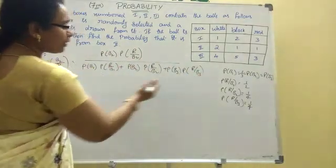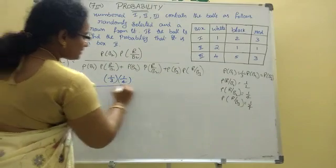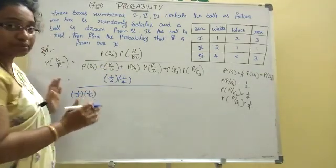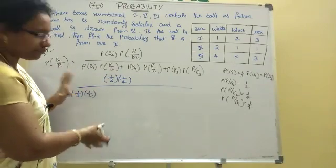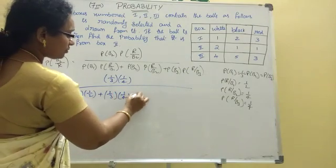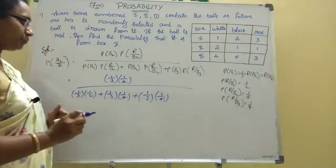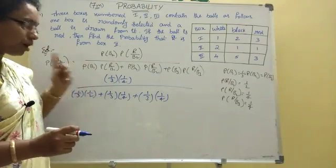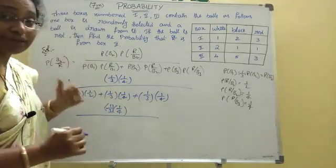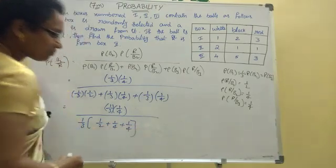Now substituting: P(B2) is 1/3 into P(R | B2) is 1/4. Divided by: P(B1) is 1/3 into P(R | B1) which is 1/2, plus P(B2) is 1/3 into 1/4, plus P(B3) is 1/3 into 1/4. Since 1/3 is common throughout, we take 1/3 common in the denominator. Remaining in denominator: 1/2 plus 1/4 plus 1/4.